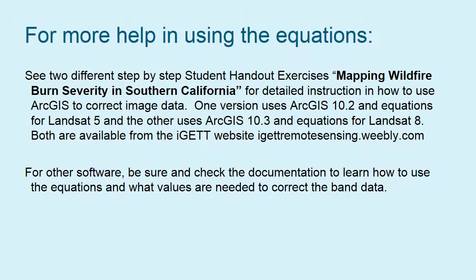For more help using these equations in ArcGIS software, there are two exercises on mapping wildfire and burn severity in Southern California. One version uses ArcGIS 10.2 with the Landsat 5 equations, which differ from those for Landsat 8. The other, being prepared and available soon, uses ArcGIS 10.3 with the Landsat 8 equations. If you use other software, check its documentation to determine what has already been corrected and what still needs to be done. This also applies to non-Landsat imagery — always obtain the metadata files to know what corrections are needed.